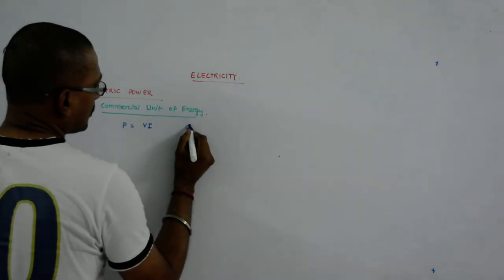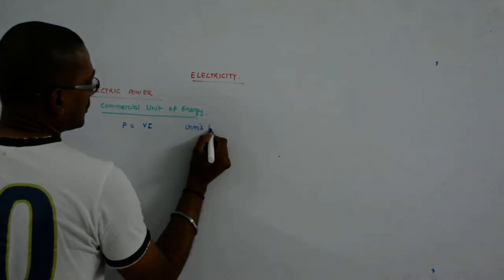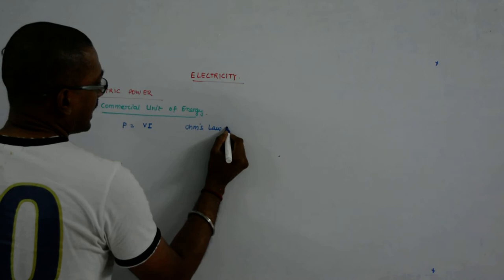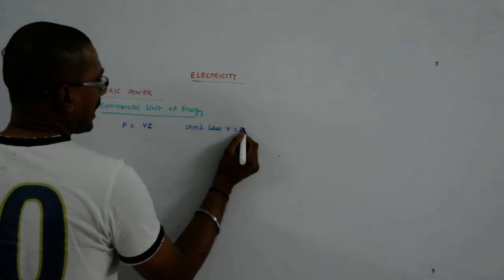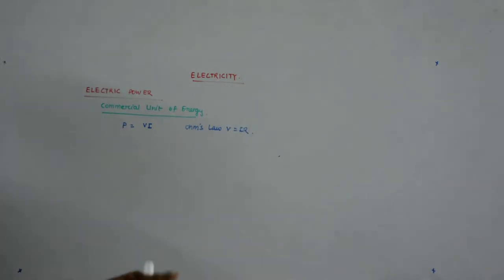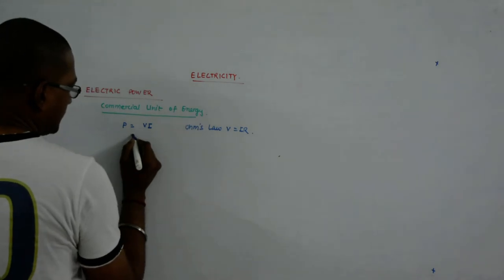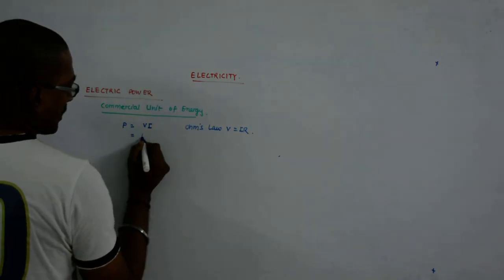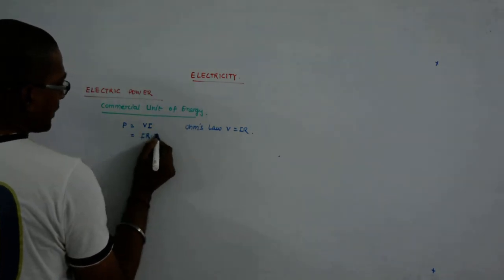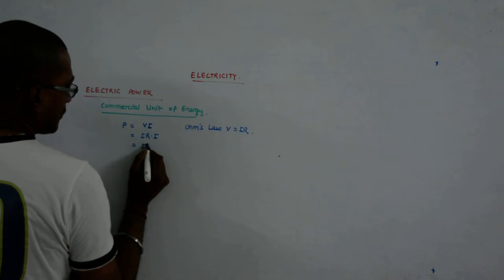We also know by Ohm's law that V is equal to I into R. Now if V is equal to I into R, then this is IR into I, that is why it becomes I square R.